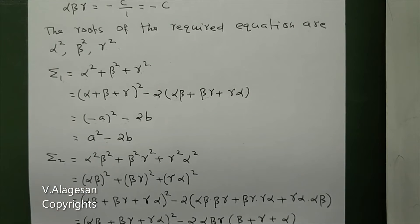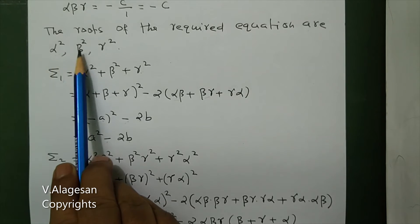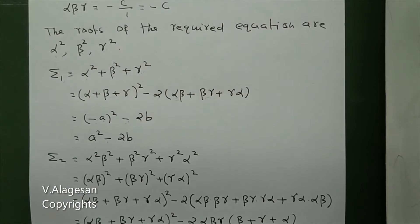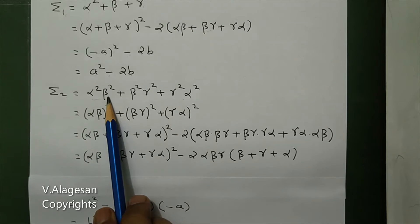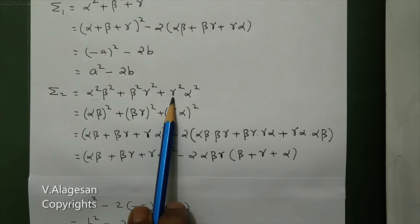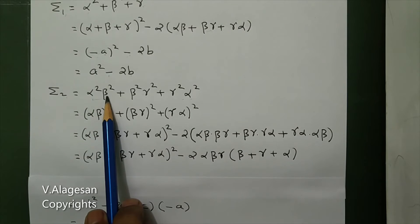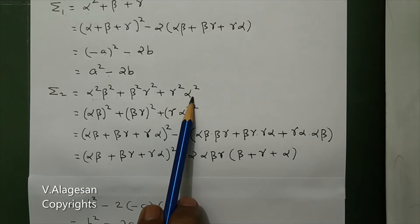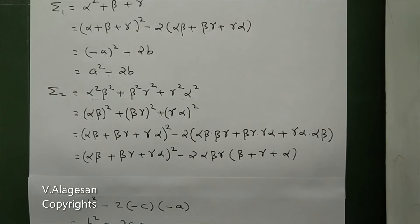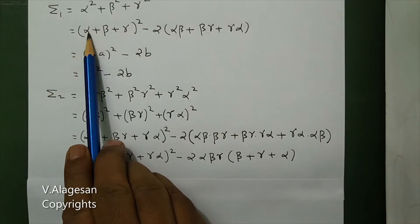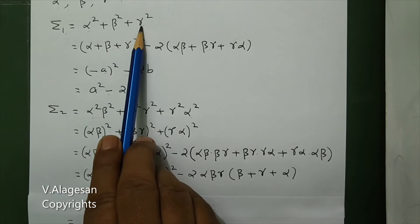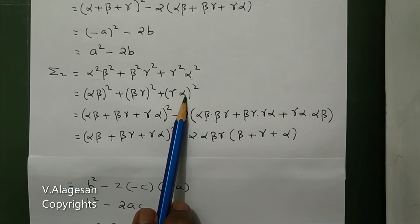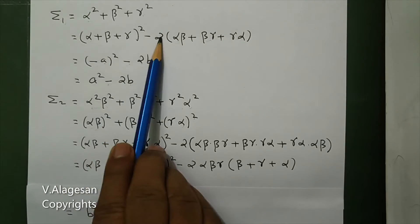Next, Σ2 is the sum of the product of two roots of the required equation: alpha²·beta² + beta²·gamma² + gamma²·alpha². We apply the identity: (alpha·beta + beta·gamma + gamma·alpha)² - 2(alpha·beta·beta·gamma + beta·gamma·gamma·alpha + gamma·alpha·alpha·beta).